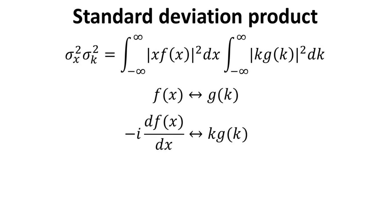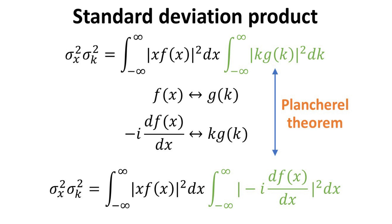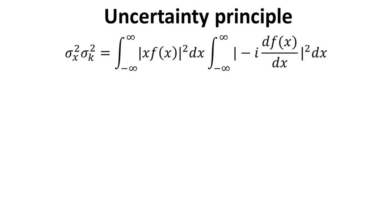To proceed, we need the following identities. Given that f of x and g of k are Fourier pairs, we recall that the Fourier transform of the differential of f with respect to x is given by k multiply by g of k. We can then rewrite the integral in green using the Plancherel theorem, which states that the norm of a function and its Fourier transformed pair must be equal. Thus, we end up with a new variance product expressed only in terms of the variable x.